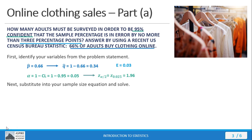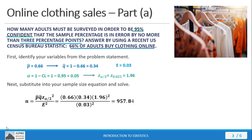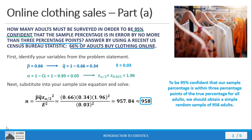We substitute the values into our equation and punch out the answer. Here's our sample size equation. We substitute the values we have into our calculator and get 957.84. In all cases we want to round up, so we're going to go to 958. This is the minimum sample size we need to be 95% confident within 3 percentage points of the true percentage.